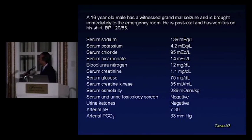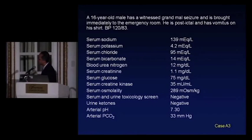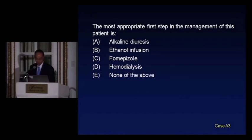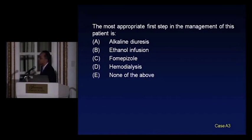A 16-year-old male has a witnessed grand mal seizure and is brought into the ER. He's post-ictal and has vomitus on his shirt. Blood pressure is 120 over 83. Bicarb is 14, creatinine 1.1, glucose 75, CK 35, serum osmolality 289. Serum and urine tox screens are negative, urine ketones negative, arterial pH 7.3, PCO2 33. The most appropriate first step is: alkaline diuresis, ethanol, fomepizole, hemodialysis, or none of the above?